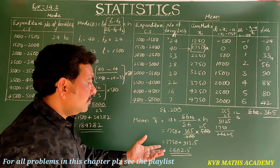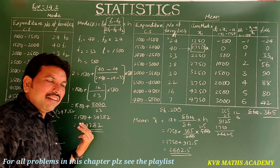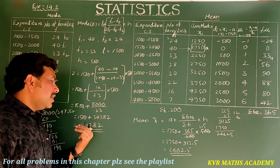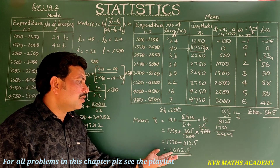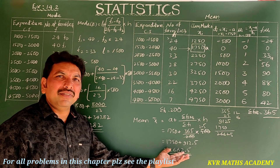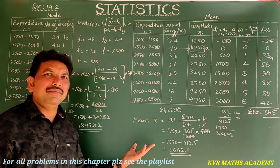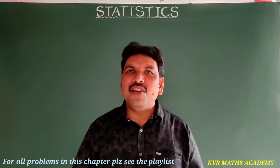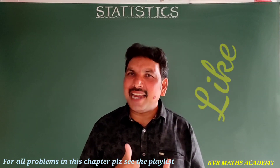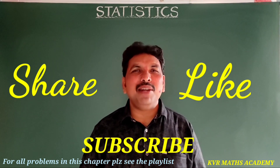Therefore, the mode of the given data is 1847.82 and the mean of the given data is 2662.5. Have you understood clearly? Please note it down. If you like this video, please like and share, and don't forget to subscribe. Thank you very much.